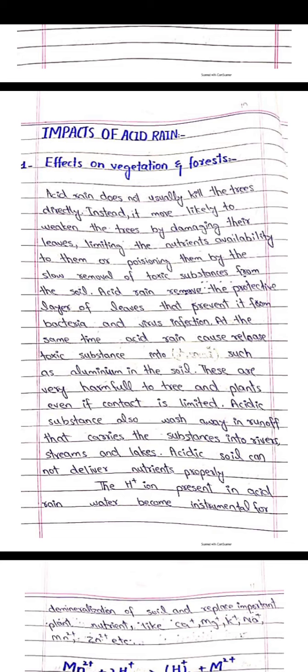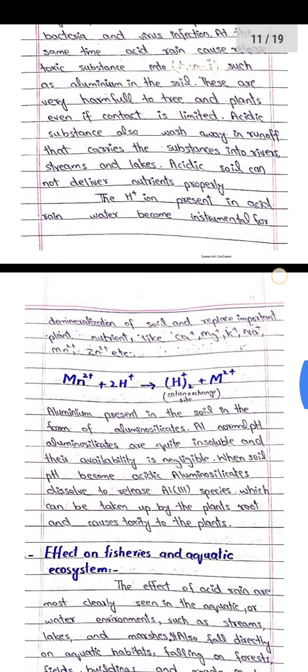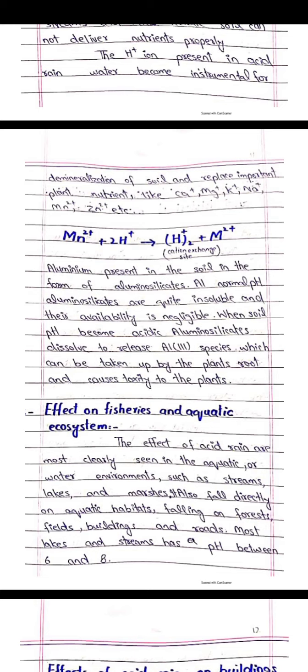Acidic soil cannot deliver nutrients properly. The H-positive ions present in acid rainwater become instrumental for demineralization of soil and replace important plant nutrients like calcium, magnesium, potassium, sodium, manganese, and zinc.